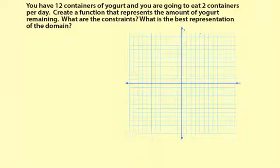You have 12 containers of yogurt and you're going to eat two containers per day. Create a function that represents the amount of yogurt remaining. What are the constraints? What is the best representation for the domain? So really there are three questions here. The first one is create a function. What I'm going to do is I'm going to make a graph of the situation first.